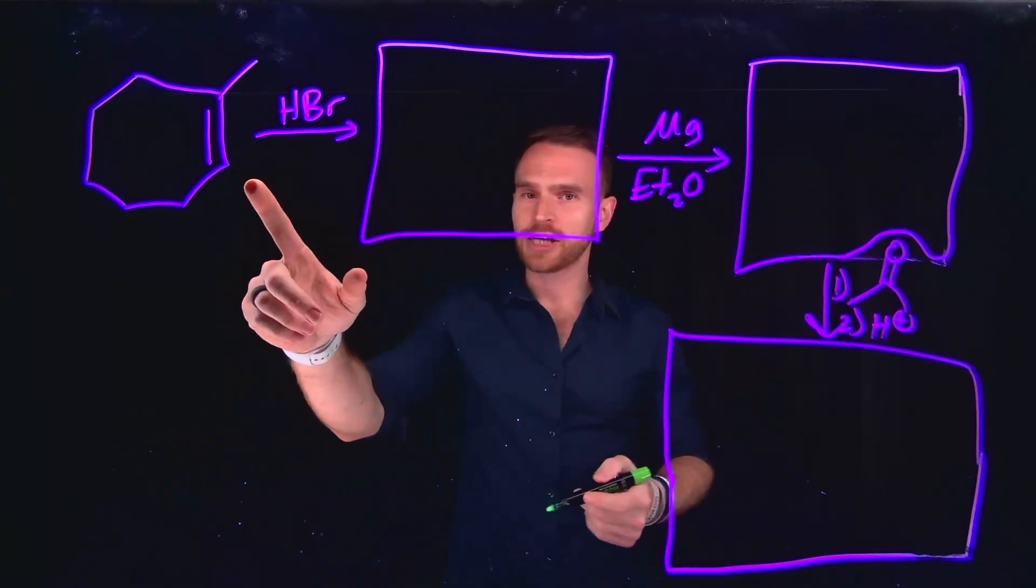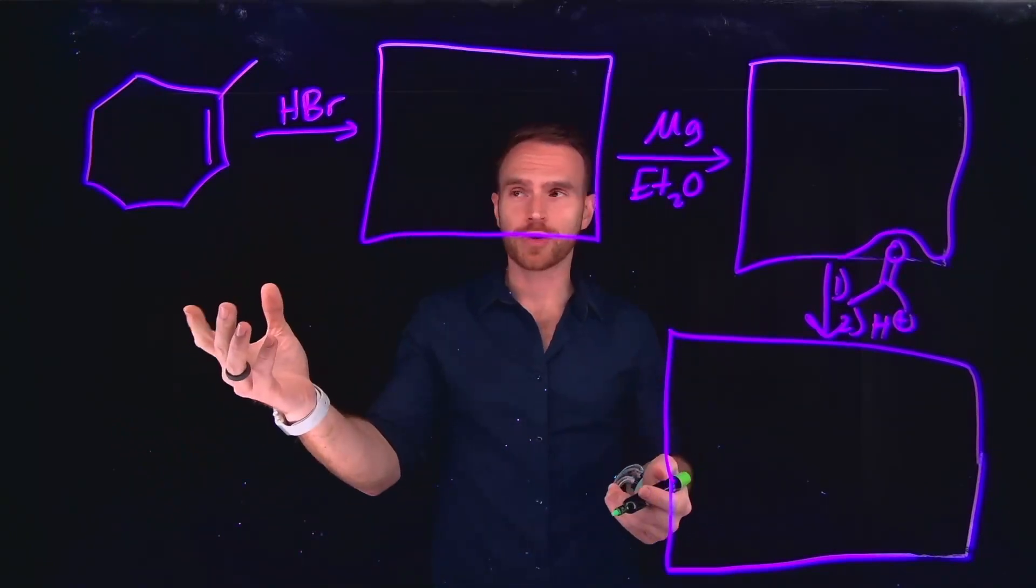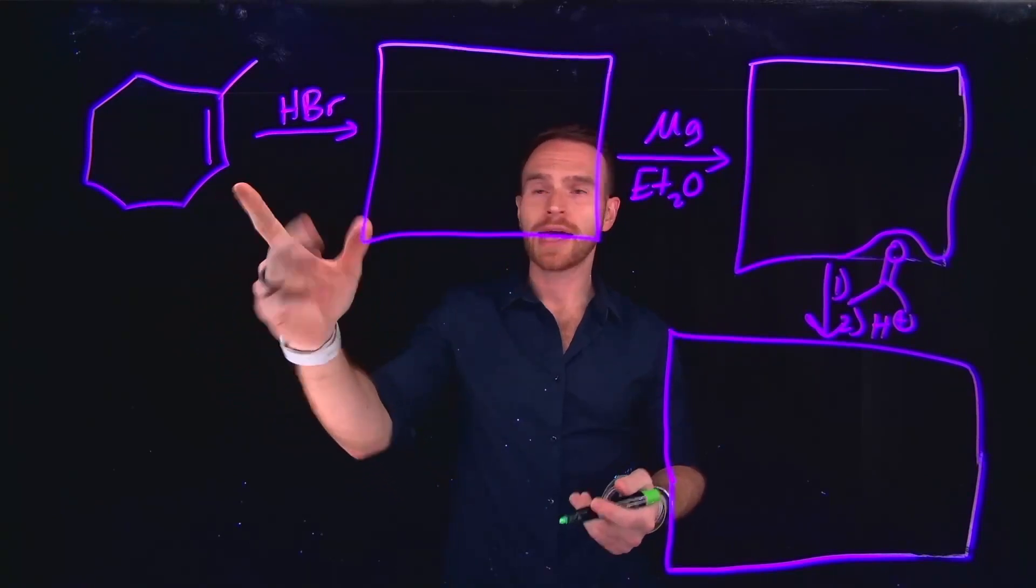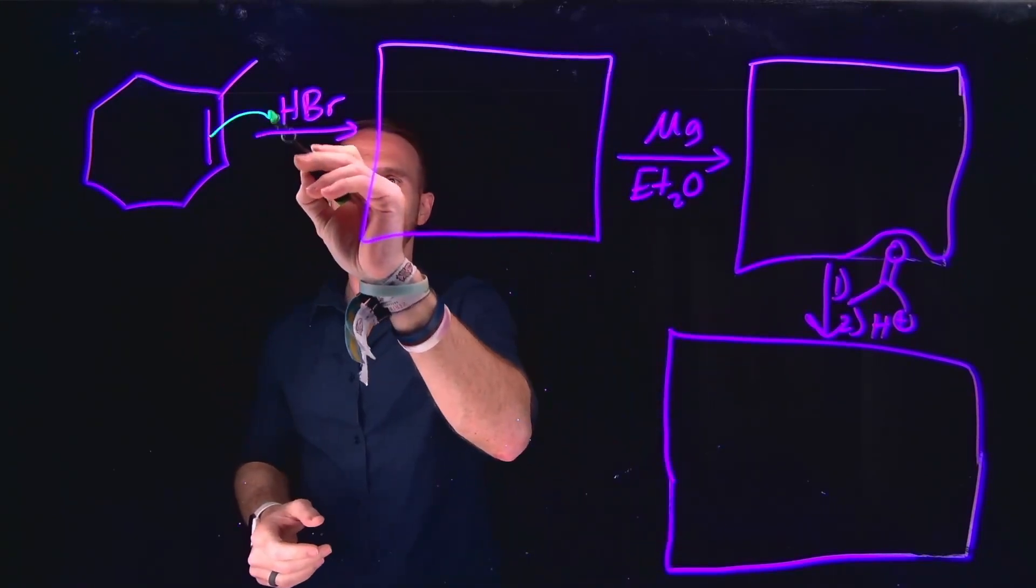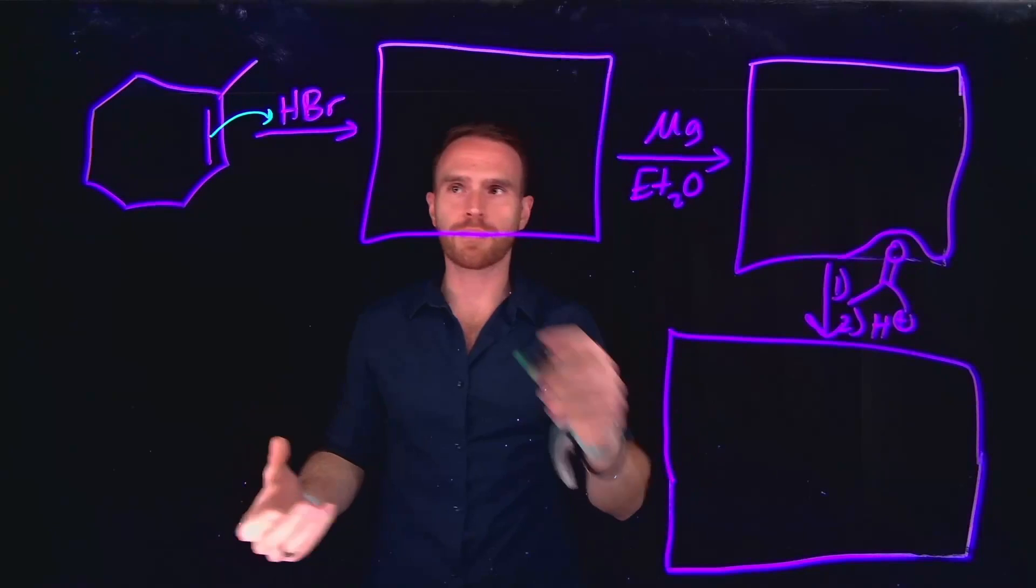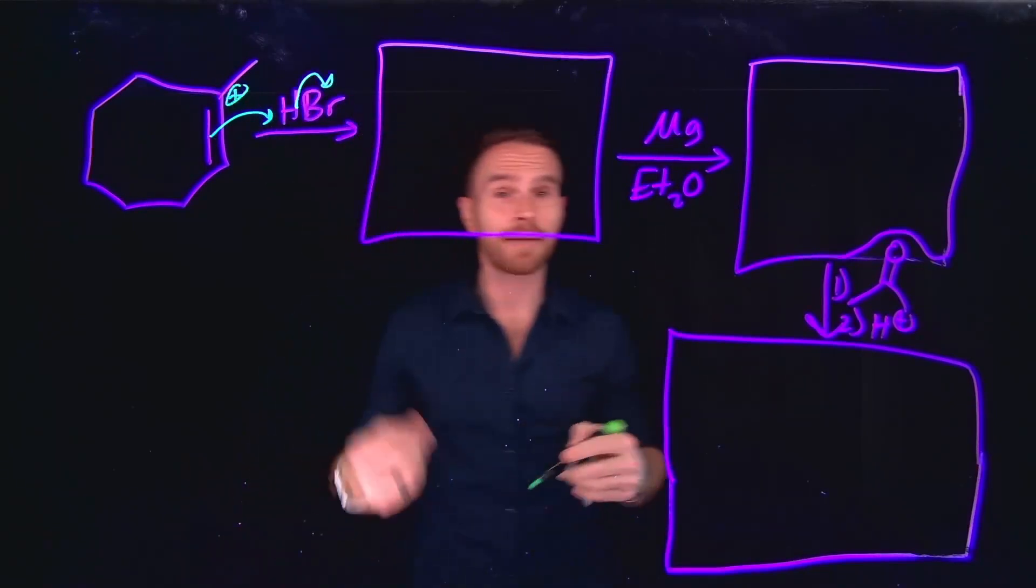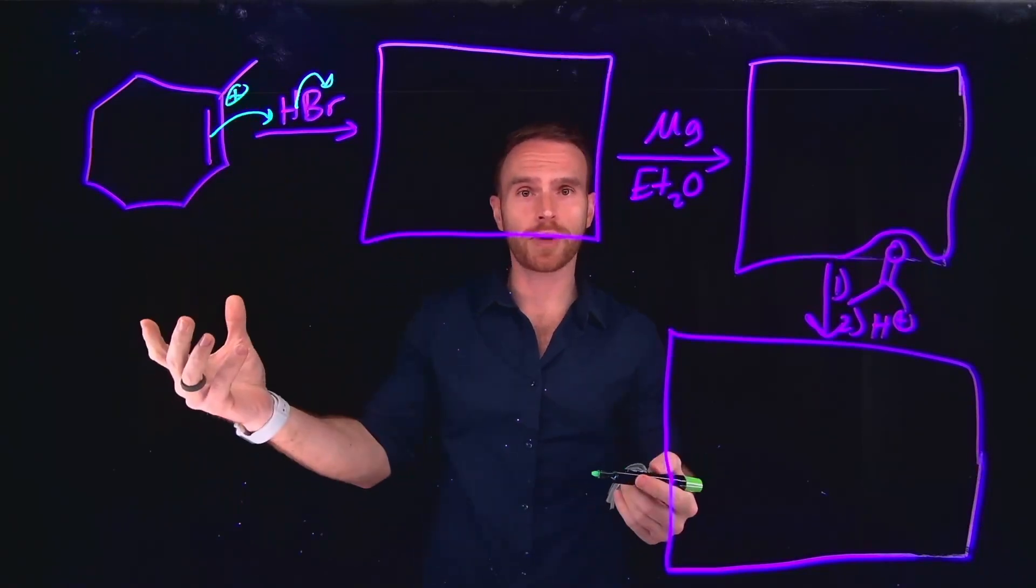The next question is a typical exam type question, where you're expected to walk through a multi-step synthesis to generate a product. Using information you learned about in previous organic chemistry courses, the very first step is addition using hydrobromic acid to an alkene. And remember that these electrons are going to attack that proton, that acidic proton, kicking off the bromide and leaving behind a carbocation at the most stable position, which is going to be that tertiary carbocation.